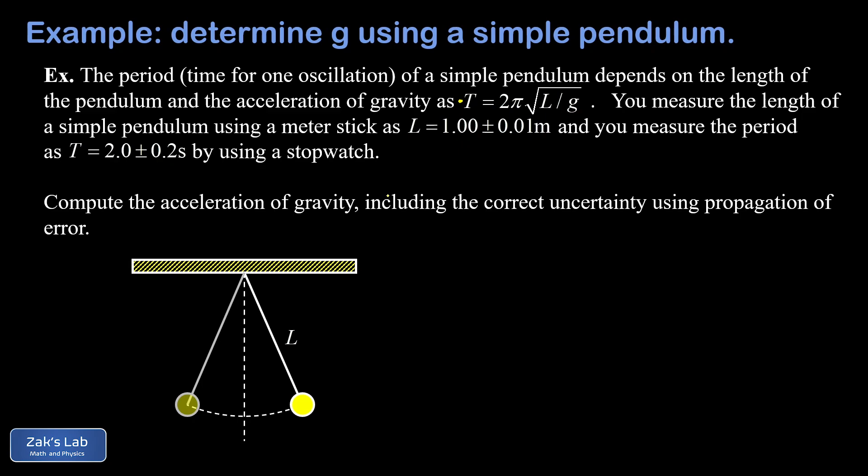We're going to calculate little g and then find its uncertainty by using the propagation of errors. The starting point is to just solve for little g in that pendulum equation. First, we'll divide both sides by 2π, and now we can square both sides to get rid of that square root.